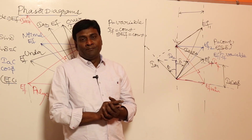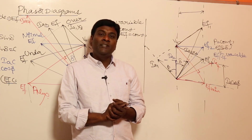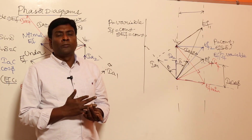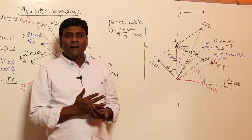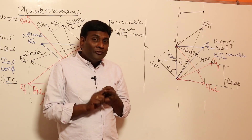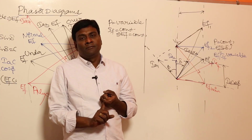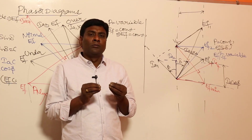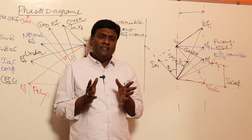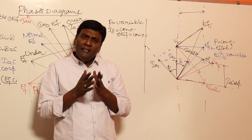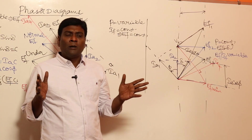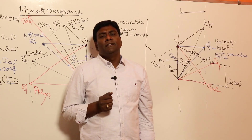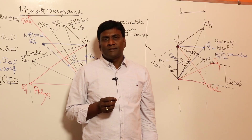We have to depend on phasors only. Just by using these phasor diagrams, approximately 70% to 80% of complete synchronous machine gate-exam problems can be solved. Let us now see how to solve problems using these four key phasor configurations.